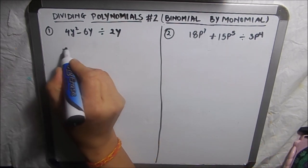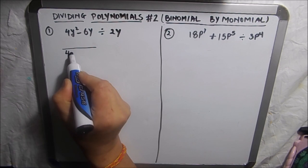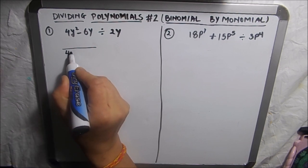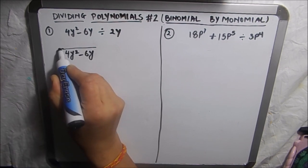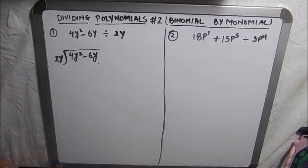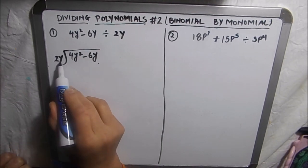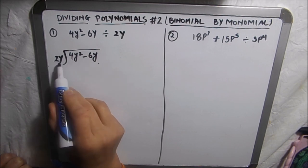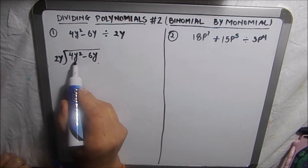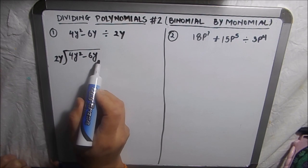For this we are going to write the divisor and the dividend as we write in simple division. We will check the first term. Here the divisor is 2y and dividend is 4y² minus 6y.